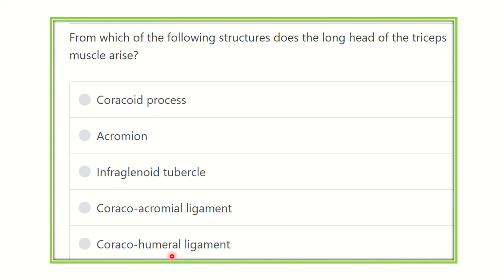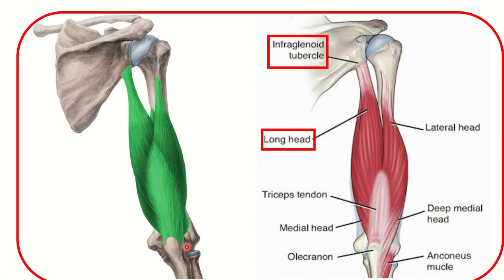We have to find out from where the long head of the triceps muscle arises. In this picture we can see the scapula, the humerus, the ulna and radius. In the second picture we can also see the scapula, humerus, ulna and radius — and this muscle shown here is the triceps. We can see there are three heads or three origins.